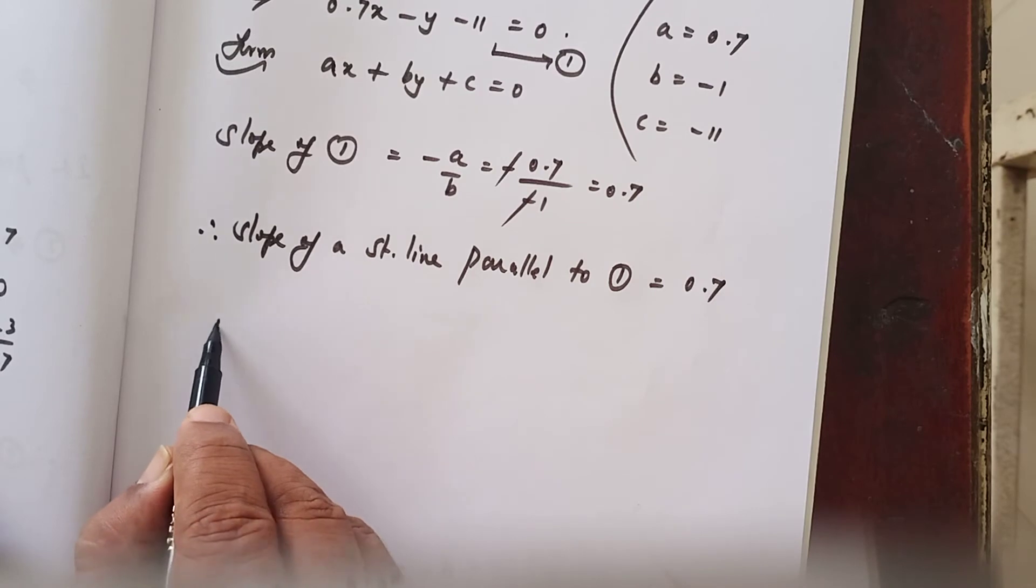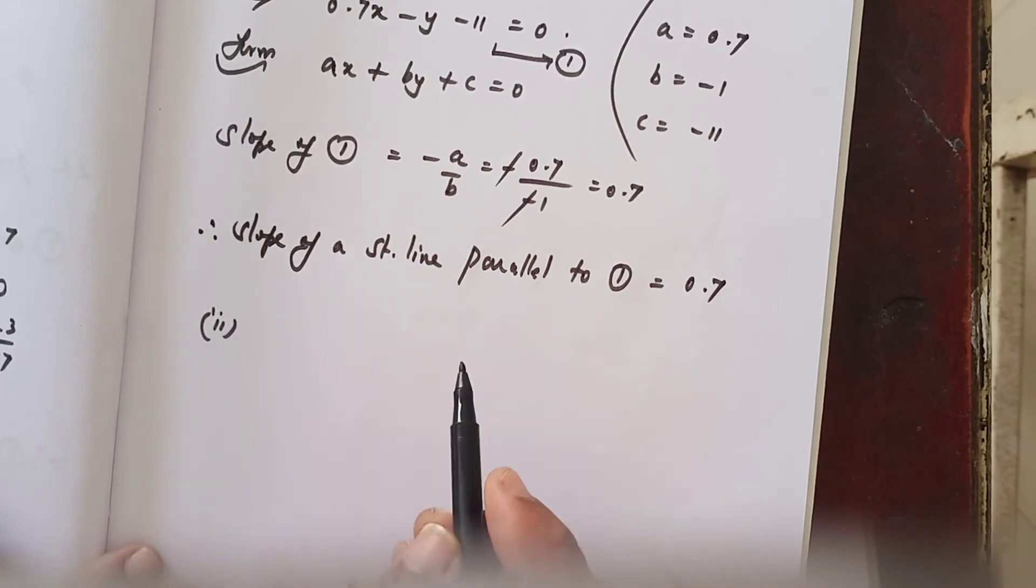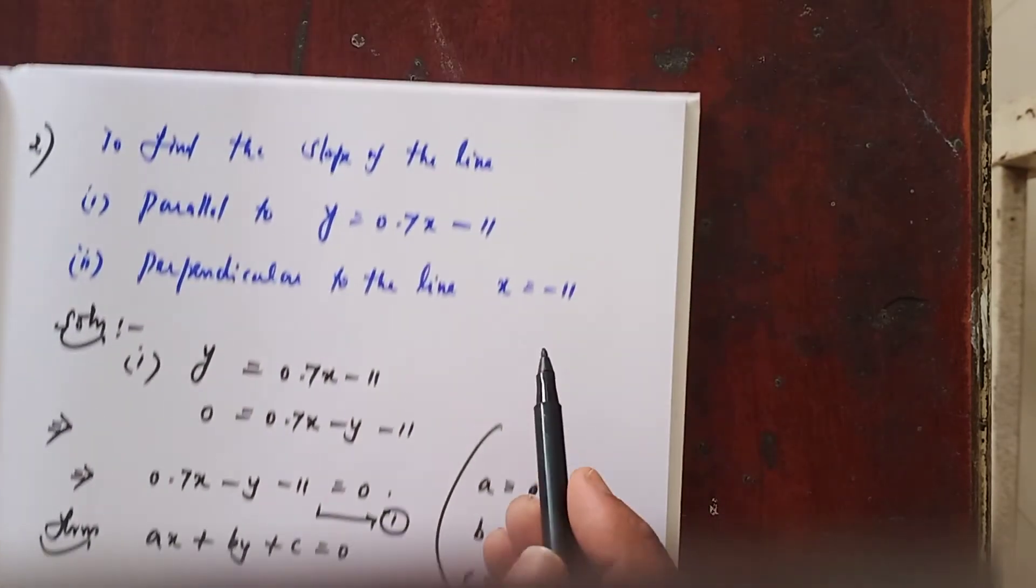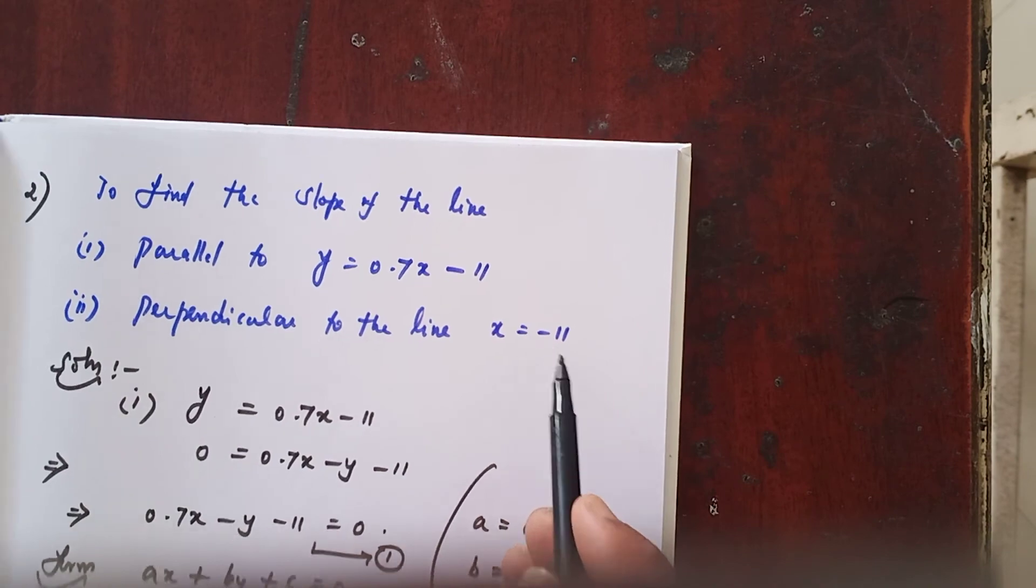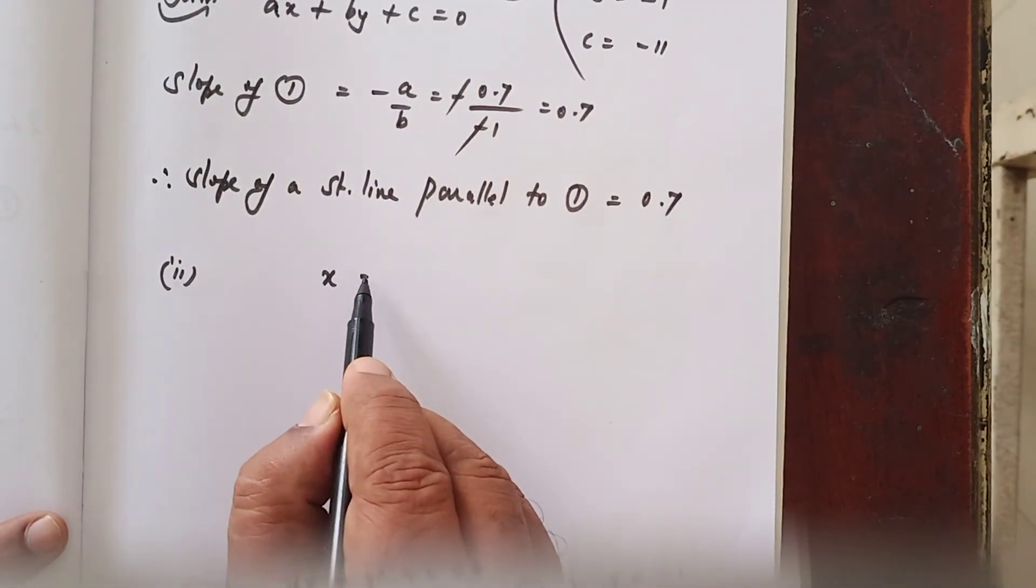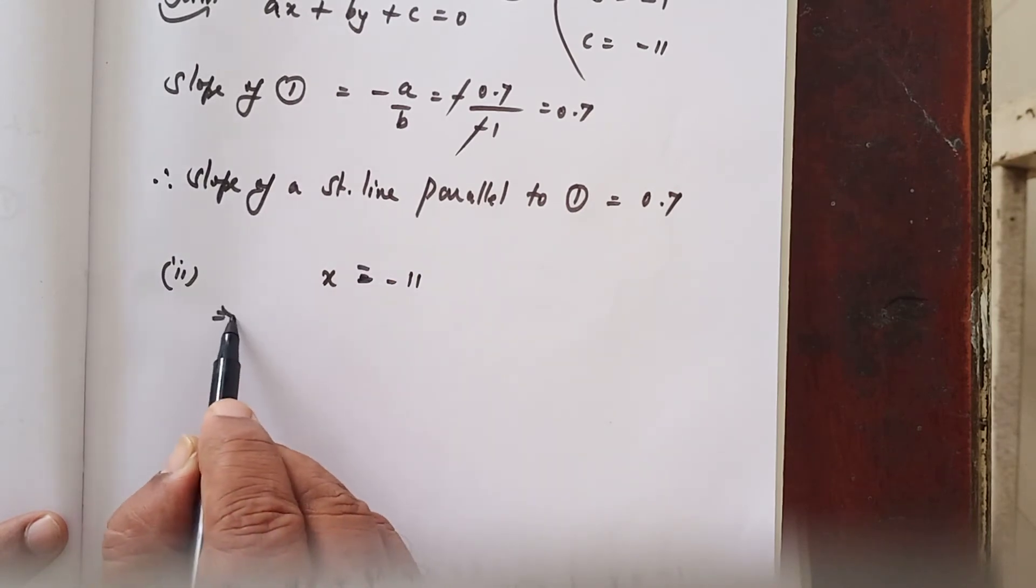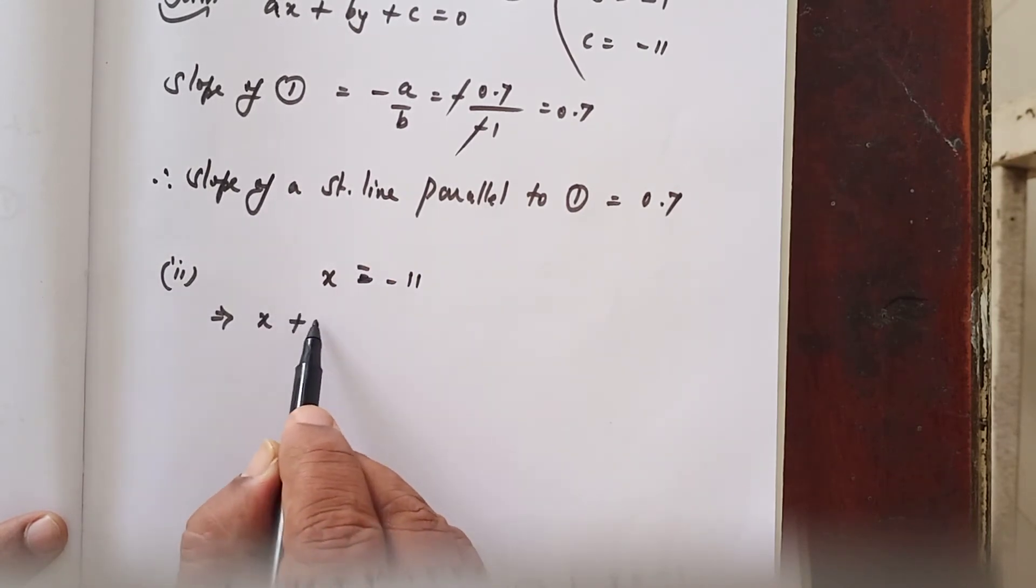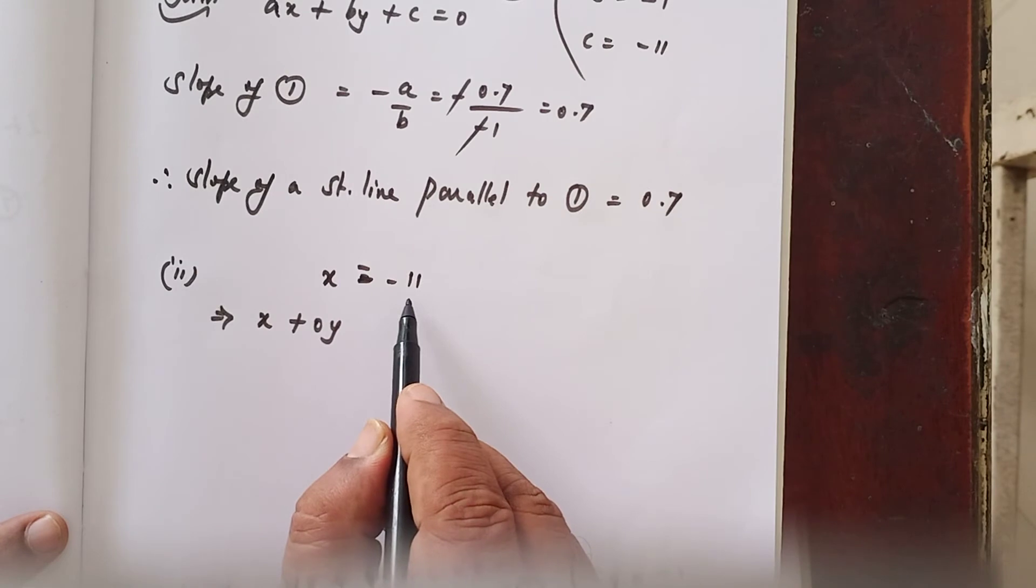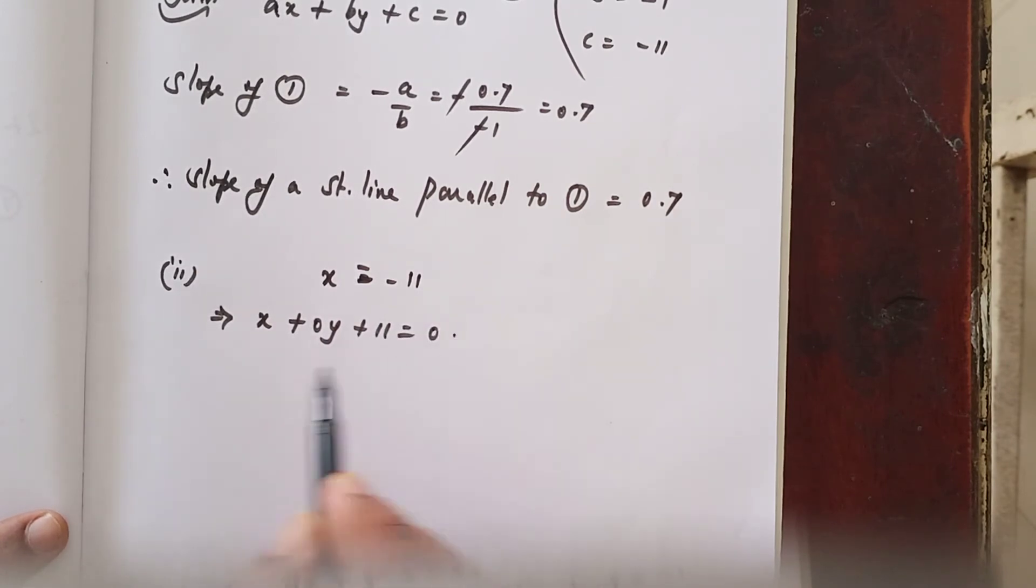Now, subdivision number 2. You are given that equation x equals minus 11. You can write x, no y at all, 0y, minus 11 comes left hand side plus 11, that is equal to 0.